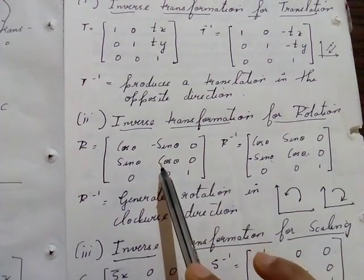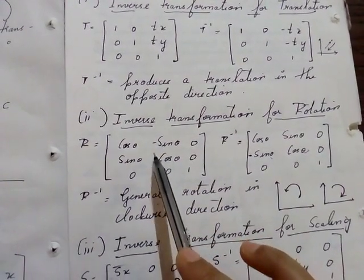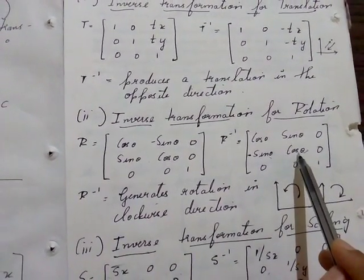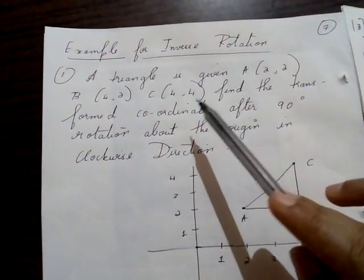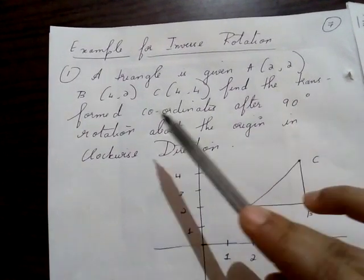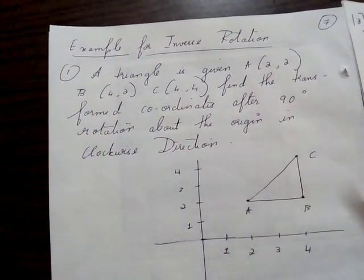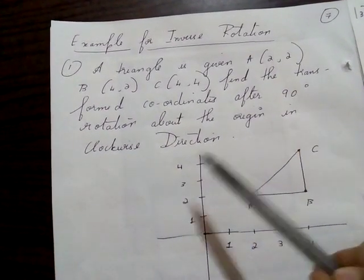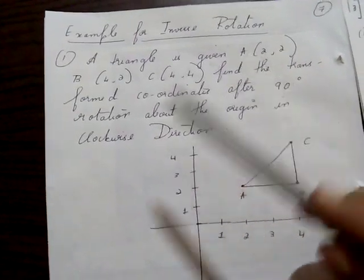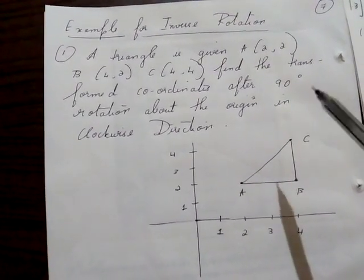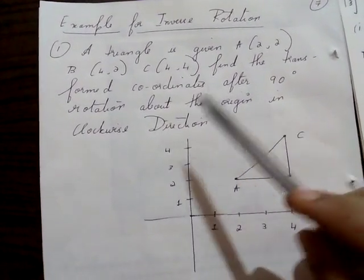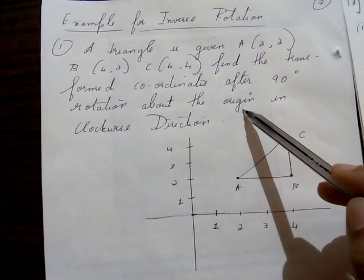This first matrix you will use when rotating in the anti-clockwise direction, which is the default direction. The second matrix you use when performing rotation in the clockwise direction. In this problem, a triangle is given: A(2,2), B(4,2), C(4,4). Find the transformed coordinates after 90 degrees rotation about the origin in the clockwise direction.